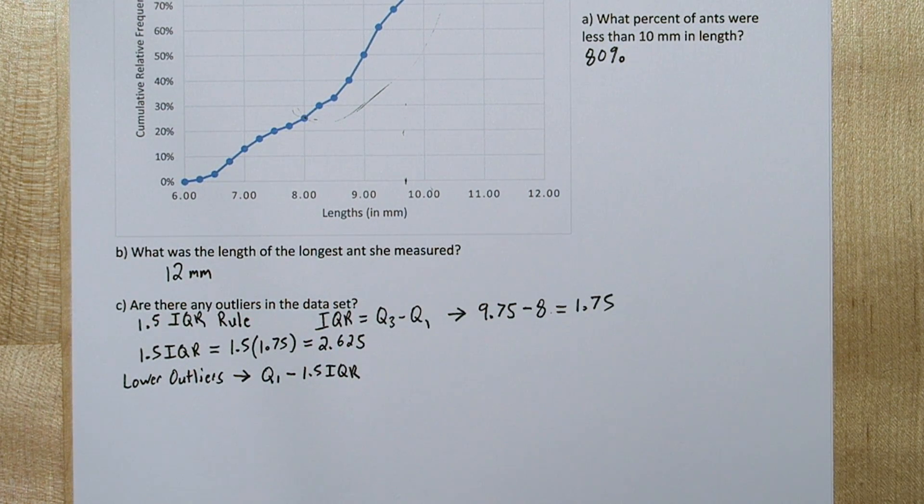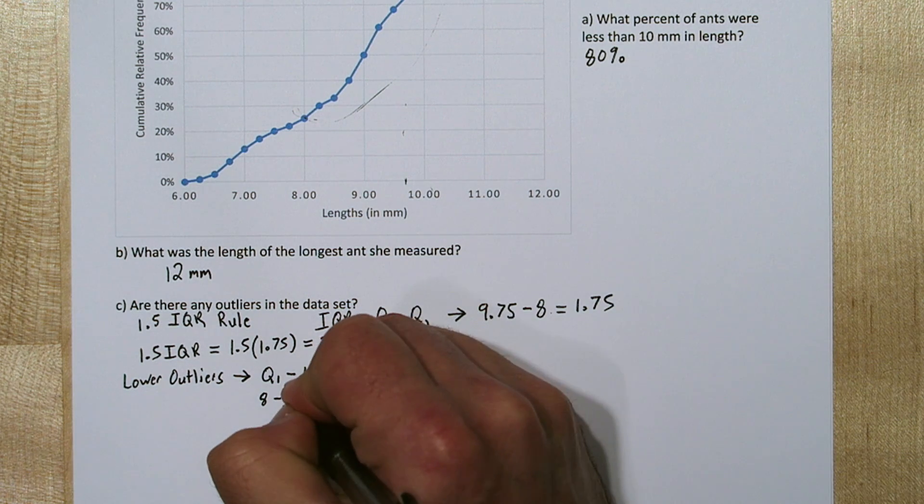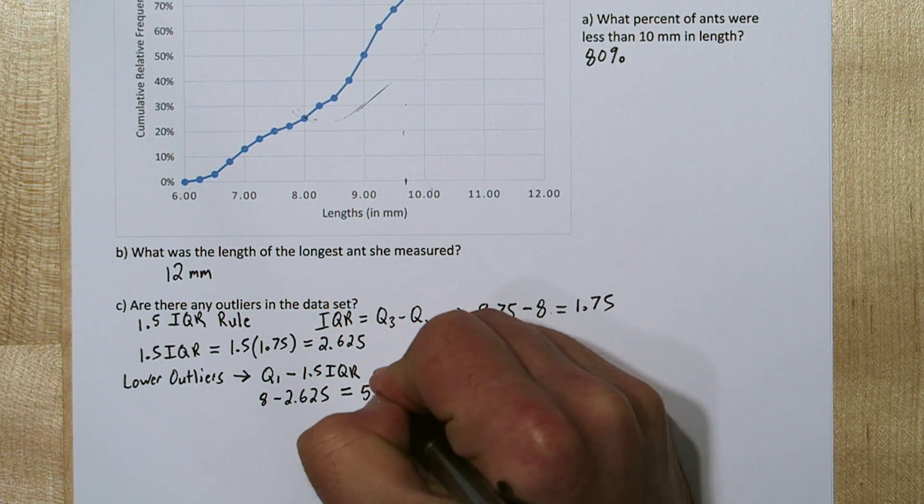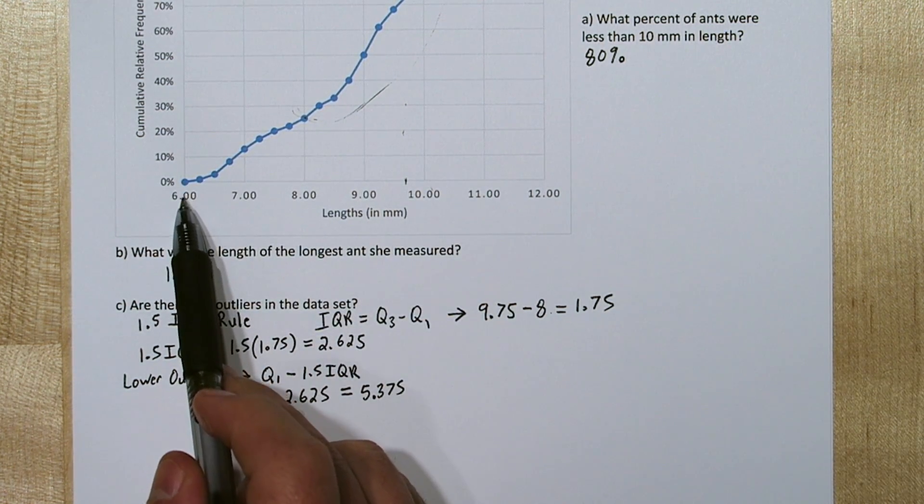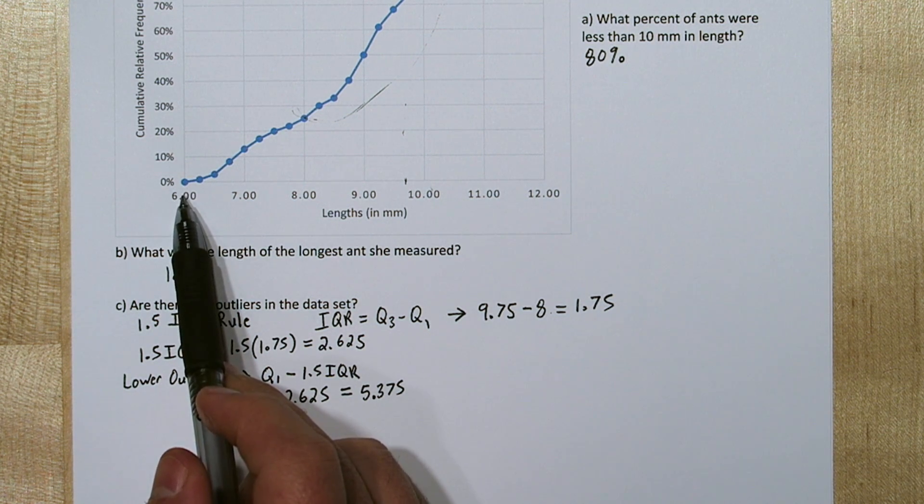To do that, we're going to look for any lengths that are at least 1.5 IQRs below quartile 1. So quartile 1 is 8, and when we subtract our 1.5 IQRs, we end up with 5.375 millimeters. Now looking up here, we're at 0 at 6 millimeters, meaning there's no ants below 6 millimeters in the dataset. So we have no lower outliers.